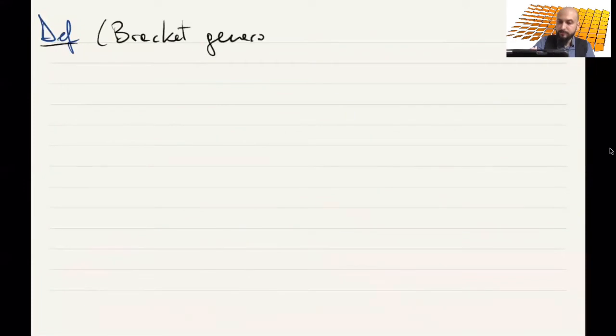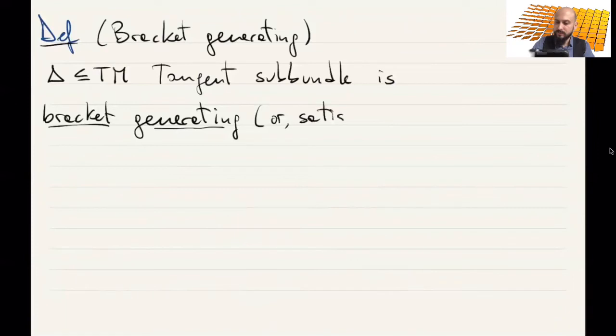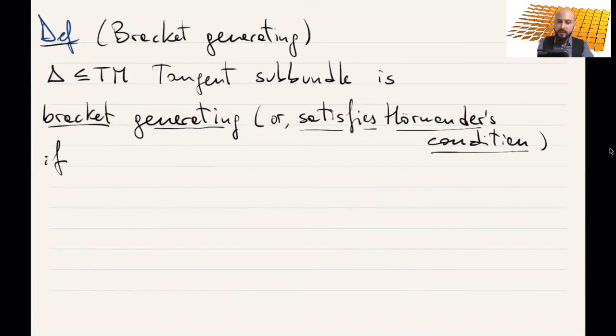Definition: bracket generating. So suppose you have a tangent sub-bundle delta. Then we say that this is bracket generating, other terminologies satisfying Hörmander's condition. If, so as the name suggests, it means that with the brackets it generates everything.